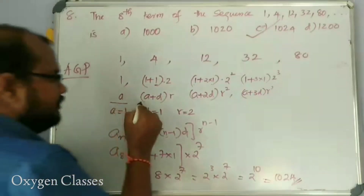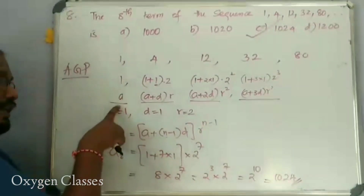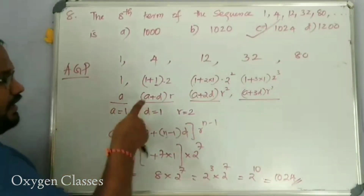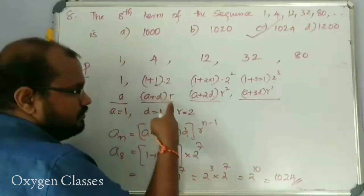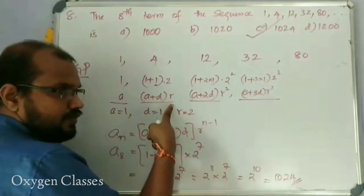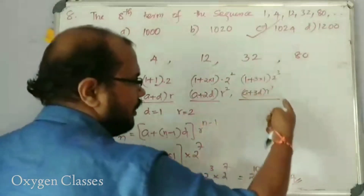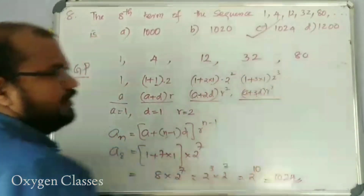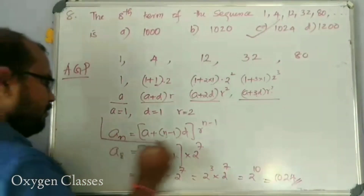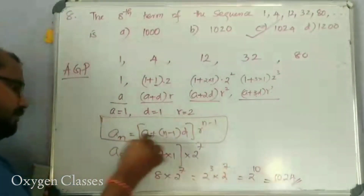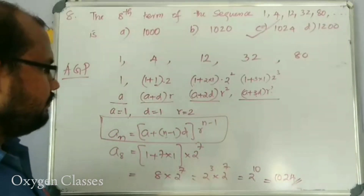You can see the terms: 1st term a, 2nd term (a plus d)·r, 3rd term (a plus 2d)·r squared, 4th term (a plus 3d)·r cube. This is the combined arithmetic progression and geometric progression formula.